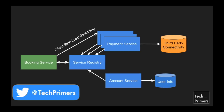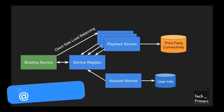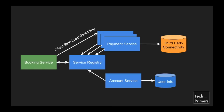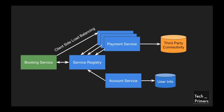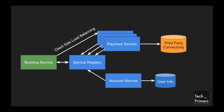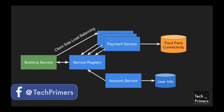Client-side load balancers are useful when you want different load balancing strategies for your services and choose which service to hit from the client side. There are tools like Ribbon, created by Netflix. If you're using Spring Boot to design your booking service, payment service, and account service, you can use the Spring Cloud implementation of Ribbon directly. Ribbon handles client-side load balancing, and if you're not using the Spring Boot platform, you can use the Ribbon library directly in your application.